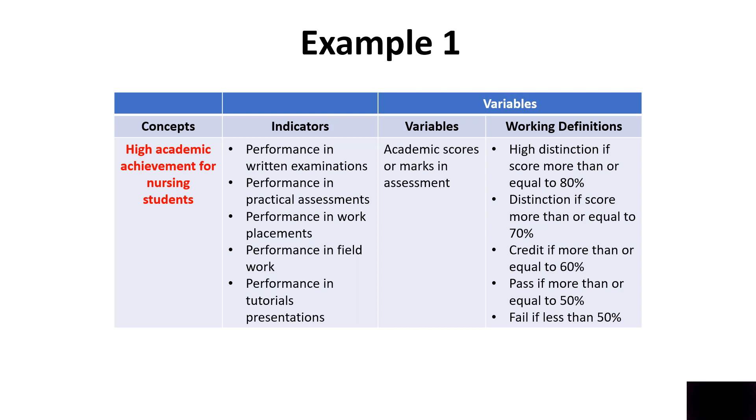So, what will be the variable I can use to measure academic achievement? The variable in this case would be marks or scores in the assessment. For example, their performance in written examination is marked or scored out of 100. If a student achieves 60, then they would get a credit grade from me, or a high distinction if they get equal to or more than 80 percent, or a distinction if they get equal to or more than 70 percent. A student's high academic achievement can be measured using the academic scores and I can also give those scores working definitions with respect to the percentage or the number that they have achieved in a particular assessment. That is how I convert the concept into a variable.